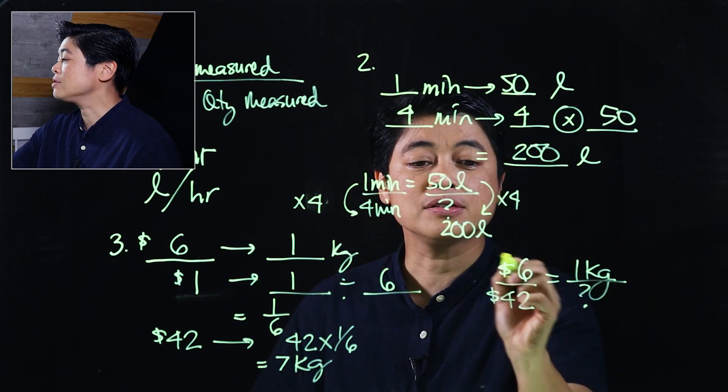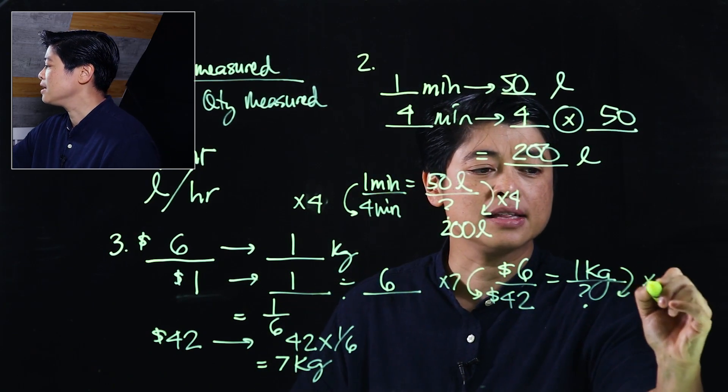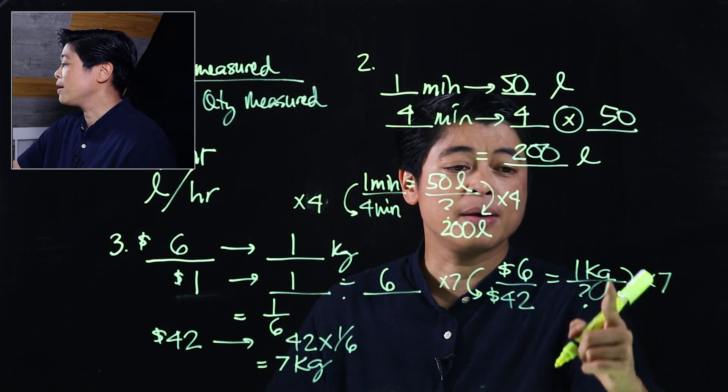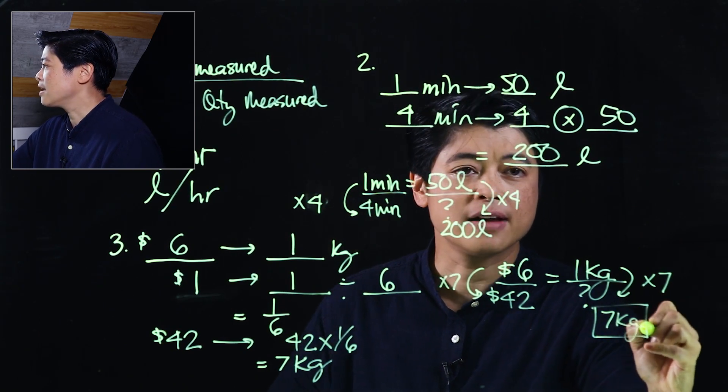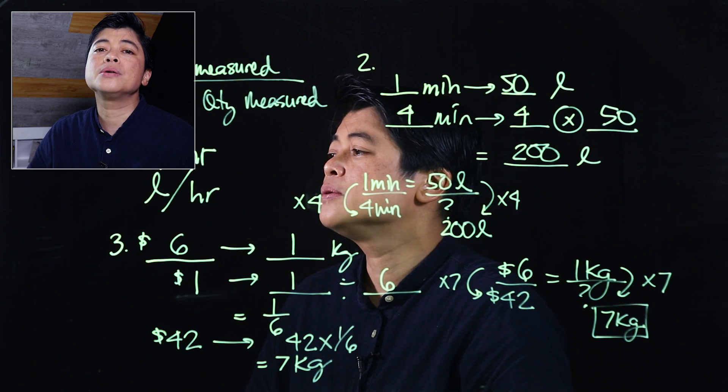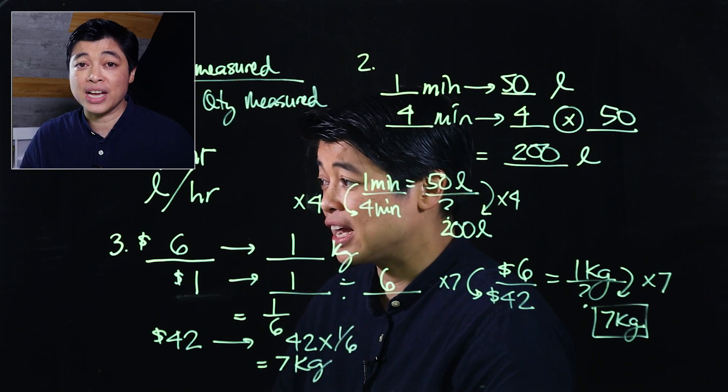So here I could say times one sixth, but I can also say times seven. So I'll do that: times seven and that times seven. So if I multiply, this will be seven, and that's the answer—seven kilograms.